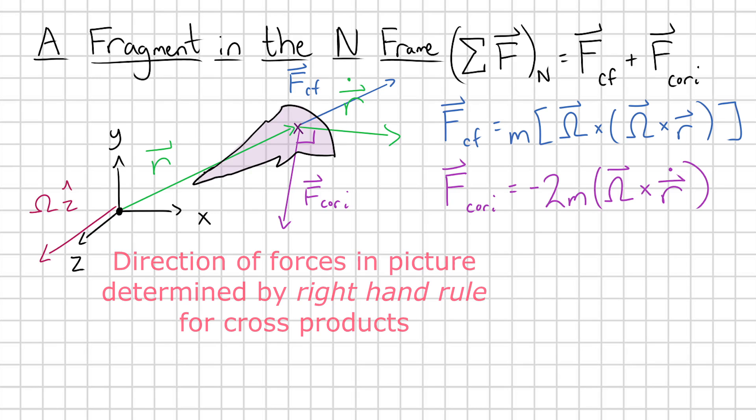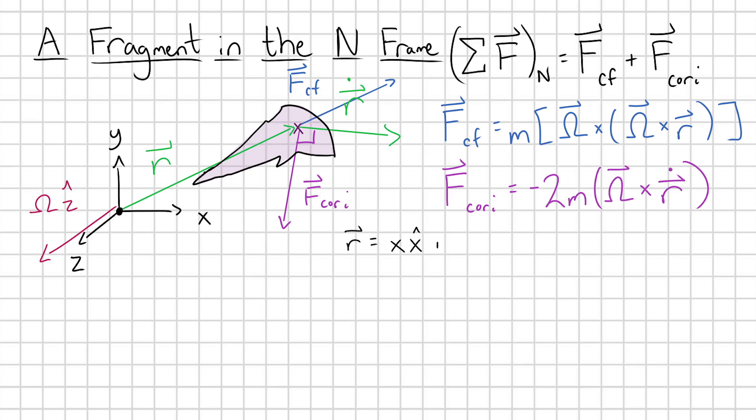Alright, but now let's use the formulas here to come up with exact expressions for the centrifugal and Coriolis forces on my fragment. So remember my fragment is in the XY plane, so r is going to be equal to x x-hat plus y y-hat in Cartesian coordinates. And its velocity at any given time we can write out as x dot x-hat plus y dot y-hat.